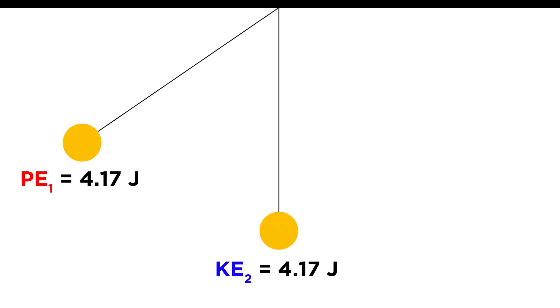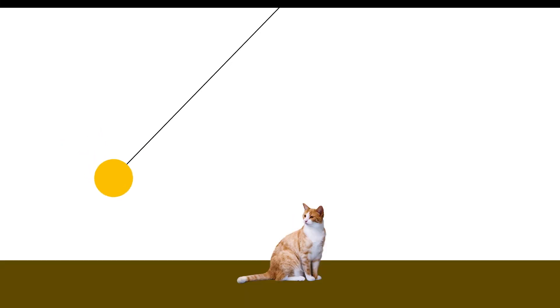Now as we said, the potential energy at this point will equal the kinetic energy at this point, and kinetic energy equals one half mv squared. So once here, four point one seven joules equals one half the mass times velocity squared. So we multiply by two, divide by the mass, and then take the square root, and we should get four point zero eight meters per second, plenty fast enough to scare your cat or whatever else you weirdos intended to do with it.